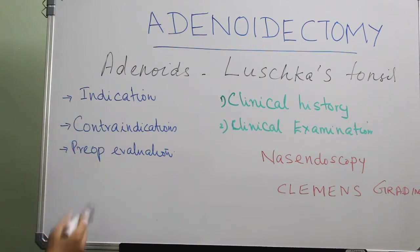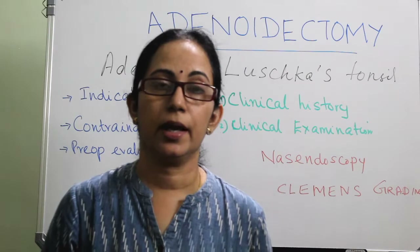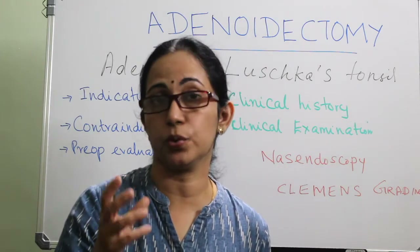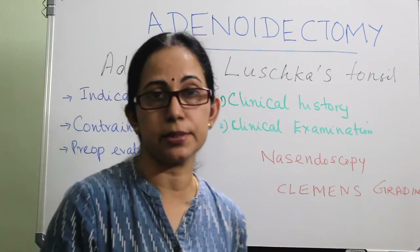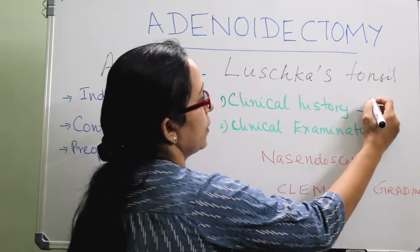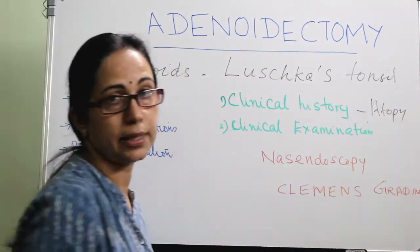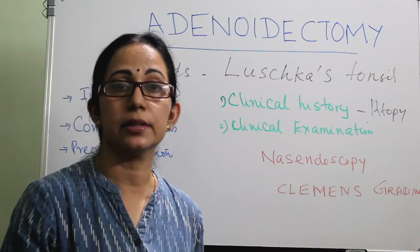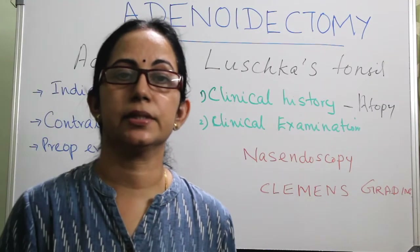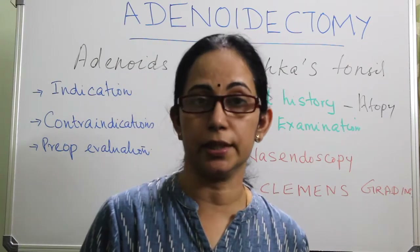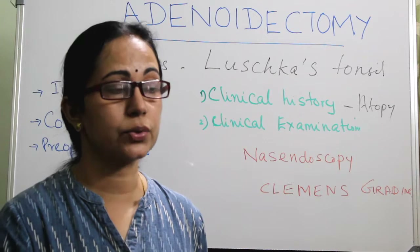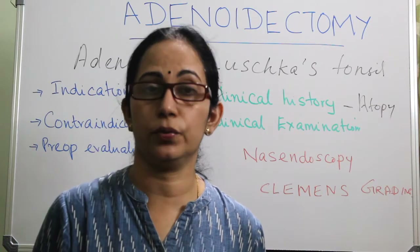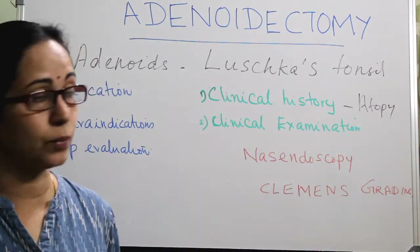Indications and contraindications covered — next is preoperative evaluation. The most important is the clinical history pointed towards adenoid hypertrophy. History of atopy is important — ask for a family history of atopy and allergic rhinitis; if there is no atopy or allergic history, that also has to be mentioned. In clinical examination, a detailed examination of the nose and ear is important. If there is long-standing allergy, you can see the allergic salute — a crease on the external nose due to constant rubbing.